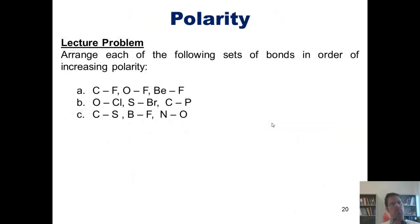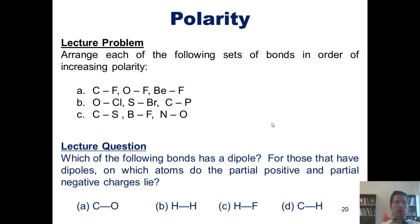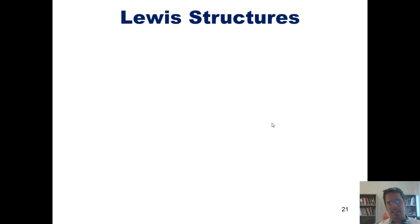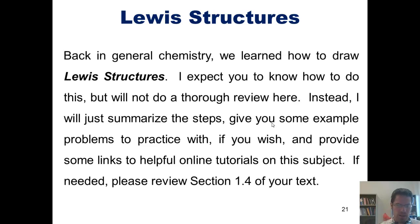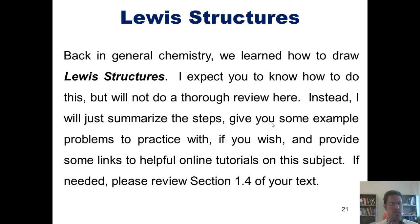Here's another impromptu lecture question: arrange each of the following sets of bonds in order of increasing polarity, and identify which bonds have a dipole and on which atoms the partial positive and negative charges lie. We now move to a different subject: Lewis structures. Back in general chemistry, we learned how to draw Lewis structures. I expect you to know how to do this, but I will not give a thorough review here. Instead, I will just summarize the steps, give you some example problems to practice with, and provide some helpful links to online tutorials. If needed, please review section 1.4 of our class text.